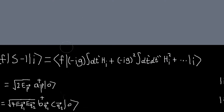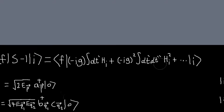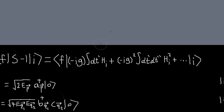We just did a few examples calculating these kinds of scattering matrix elements, and that was a pain in the ass. So basically, instead of doing that, we can work with Feynman diagrams.